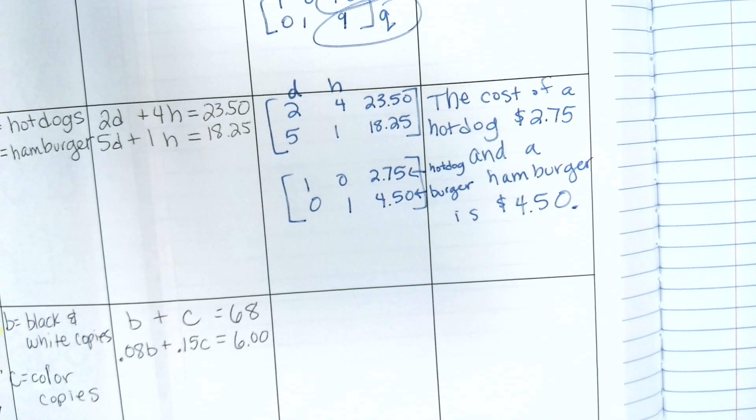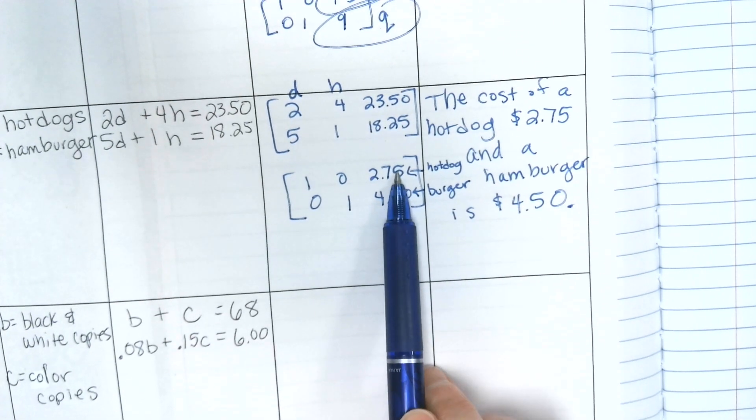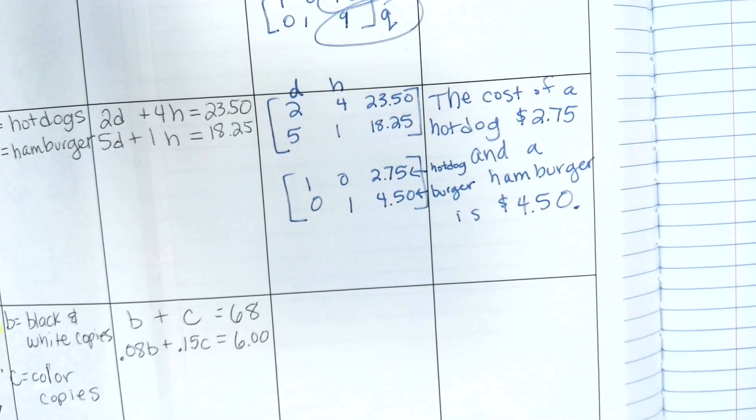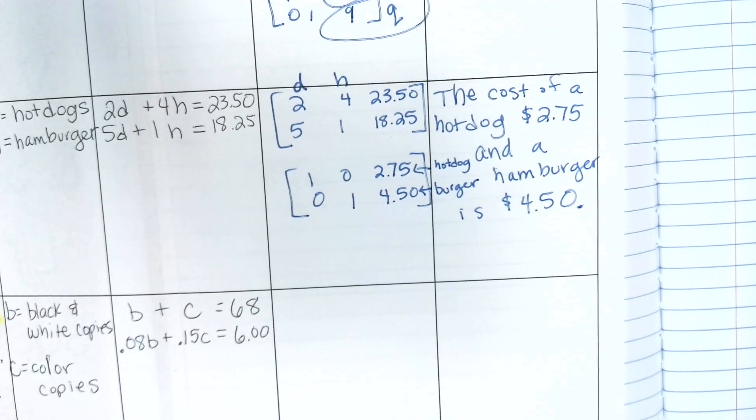So the important thing to remember is the order. The order that you originally put your equation is the order that your solution is down the column whenever you have your output matrix. Okay. Go ahead and do the next one. Write your matrix. And then use your calculator.